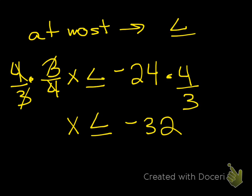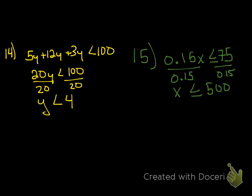Go ahead and try 14 and 15, and then I'll put the answers up. It's really about understanding what the terminology means. Number 14 is fairly simple — you have to know what perimeter is: adding the 3 sides of the triangle, and it had to be less than 100 meters. Number 15 is a little harder — it's about charge per mile. They charge 15 cents per mile, but she can only spend $75. We divide 75 by 0.15 and get that she can only drive 500 miles or less.